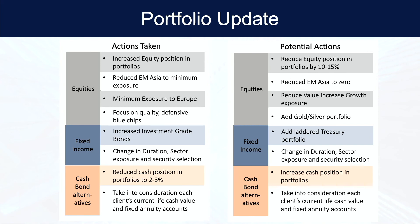Another option is we could be adding gold and silver to the portfolio as a bit of a hedge. Going into fixed income, we could be adding a laddered treasury portfolio — a short-term portfolio of one to one-and-a-half years. We could also change the duration and sector exposure relative to fixed income. We're keeping an eye on different sectors and asset classes to see which ones are moving into a mode of moving forward. From a cash and bond alternative standpoint, we could certainly be looking at increasing cash positions down the road, though I don't think it will be anywhere near what we did earlier this year.